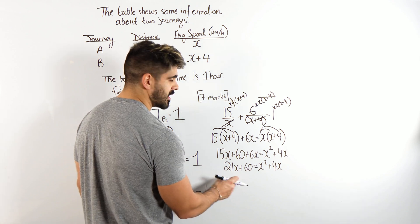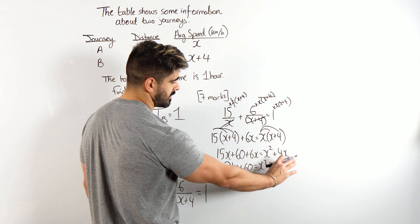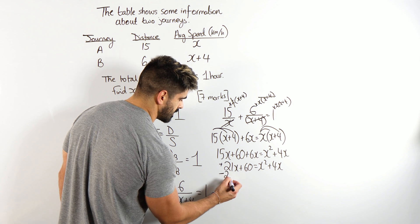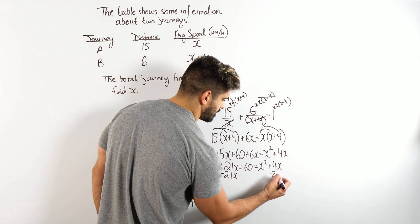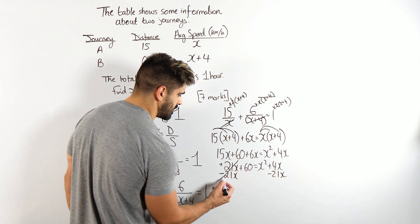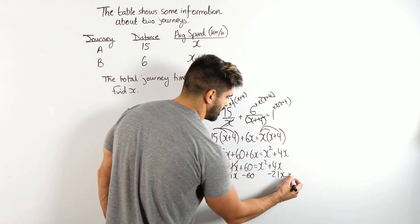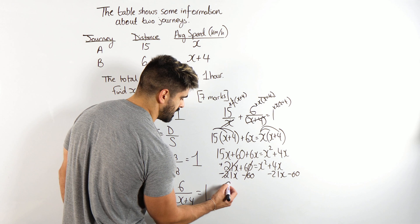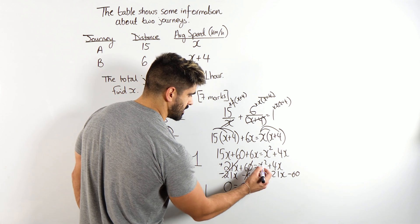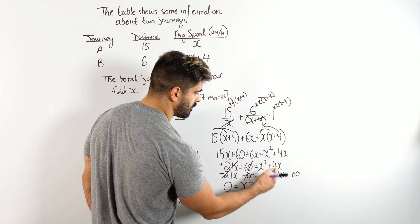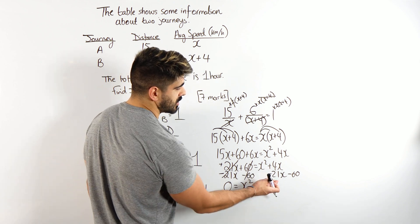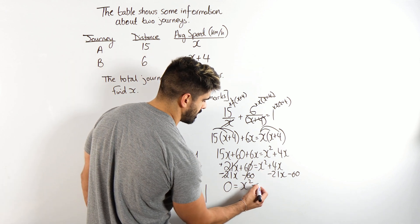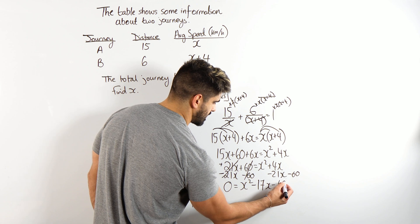We're always going to bring the terms to the positive x squared side, so I'm going to minus 21x — remember this is a positive 21 — I'm going to minus 21x from both sides, so that goes. And I'm going to subtract 60 from both sides. On this side I'm left with 0 equals x squared. We have 4 minus 21 — well, 21 minus 4 is 17 — so 4 minus 21 is going to be minus 17x, minus 60.